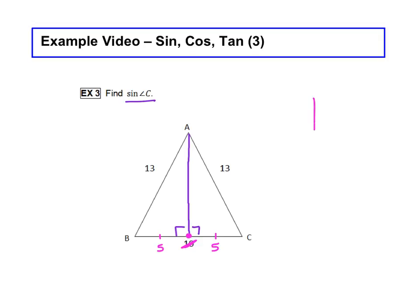So, I'm going to go ahead and just redraw. This is basically what we're looking at. Here's angle C. Here's our right triangle. We know that this is 13. This is 5.